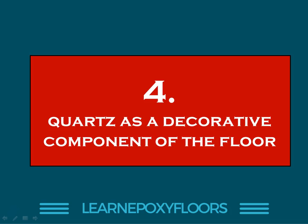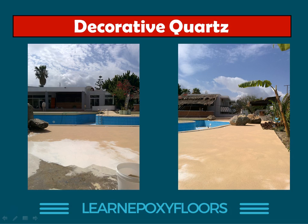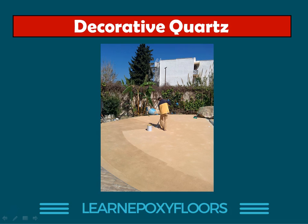Number four is using quartz as a decorative component — probably the most impressive of all. Take a look at these pictures: this was a hotel that wanted to redo their floor and make it look like a beach. We suggested using quartz sand to make it look like a real beach. You apply a wet base coat, broadcast the quartz on top to create the beach look, and then apply a transparent top coat that protects the quartz from slipping and protects the whole system from the sun.